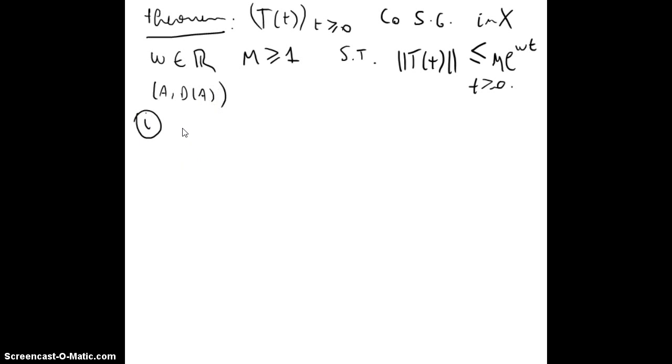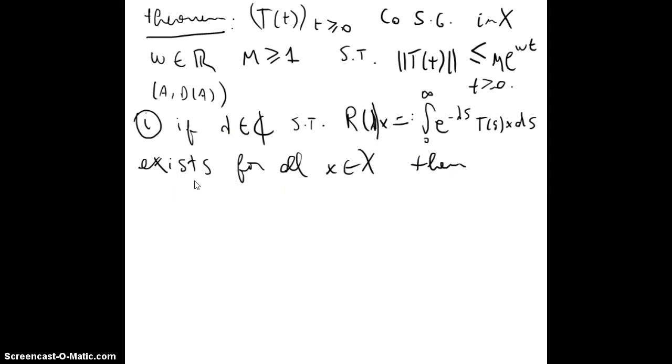First of all, if λ is a complex number such that R(λ,x) is the integral 0 to infinity of e^(-λs) T(s)x ds exists for all x in X, well if we have this then λ is in the resolvent set ρ(A) and the resolvent operator R(λ,A) is equal to this R(λ) that we defined here.